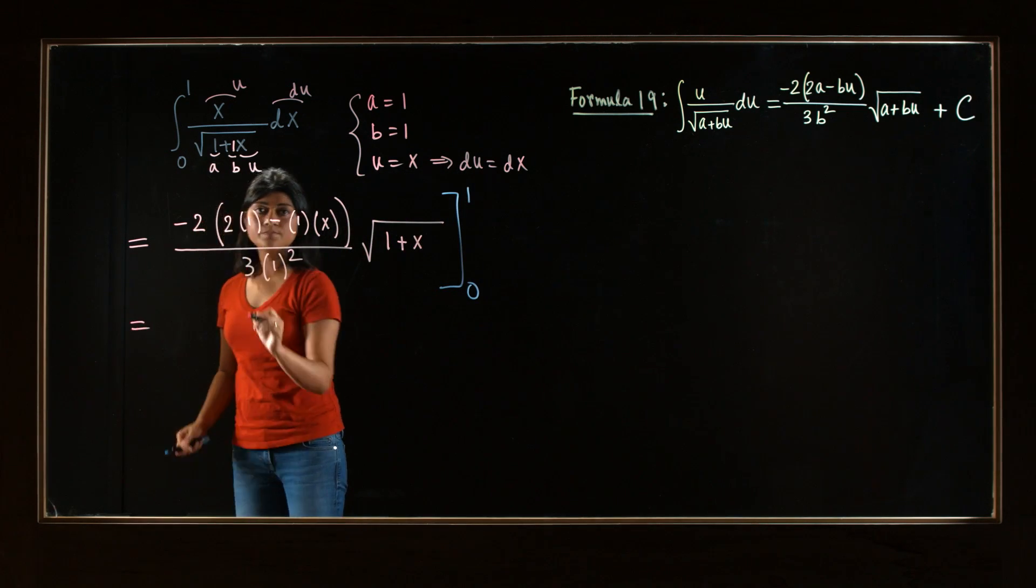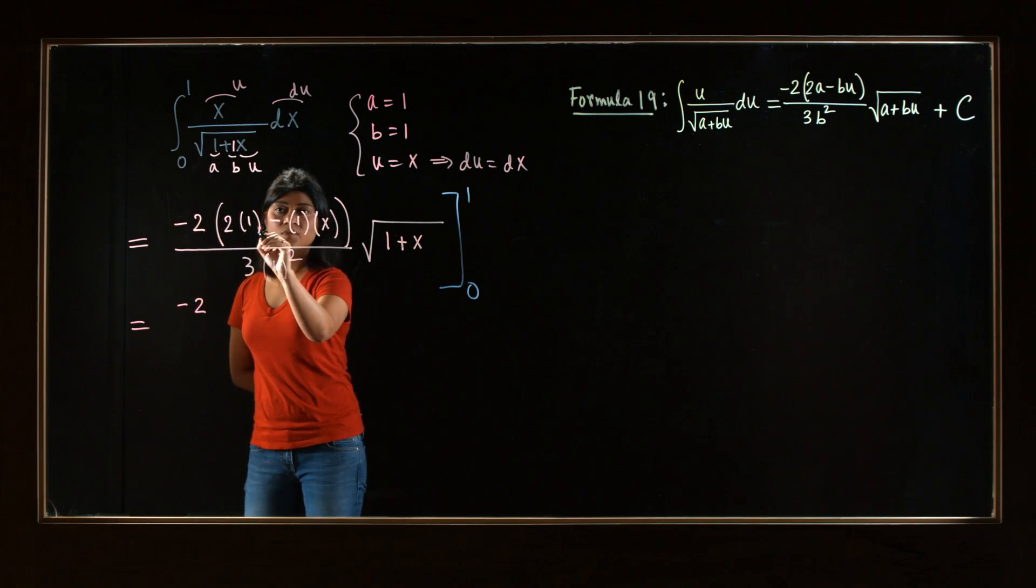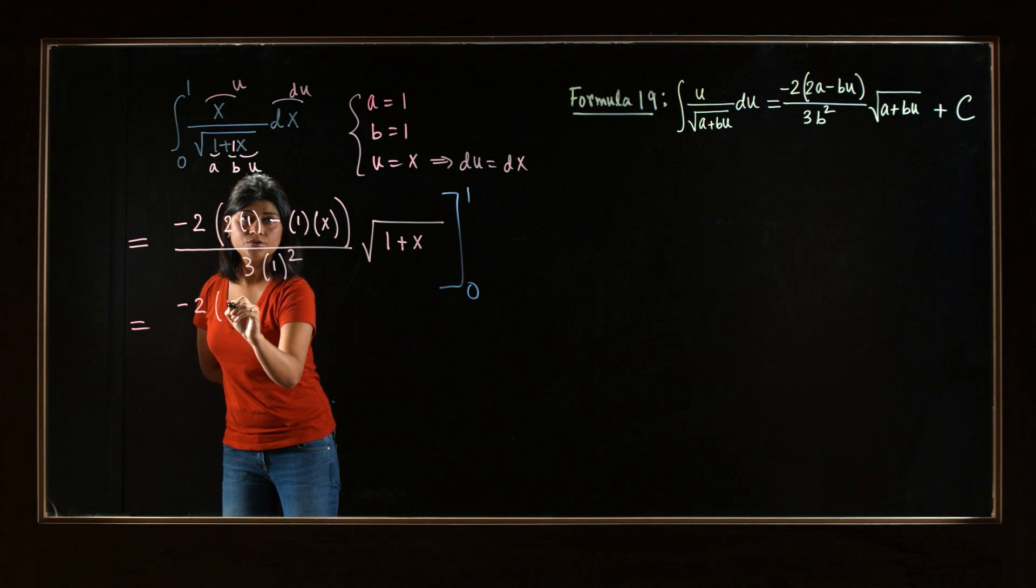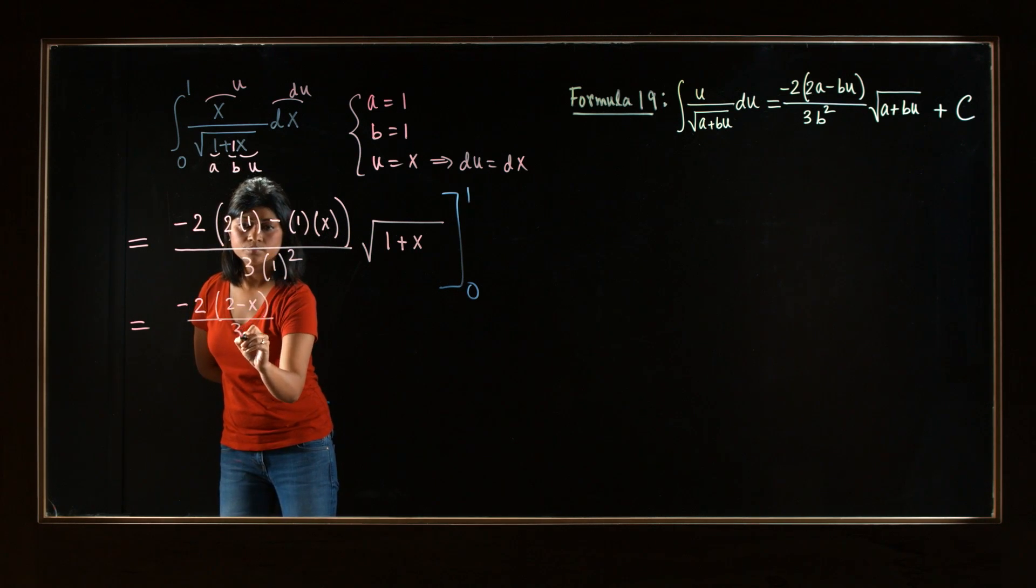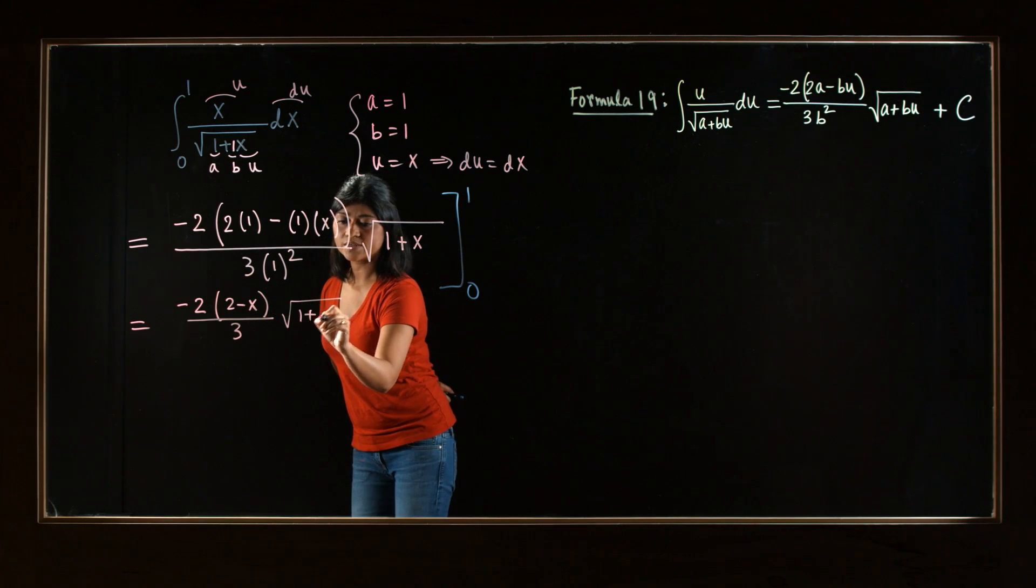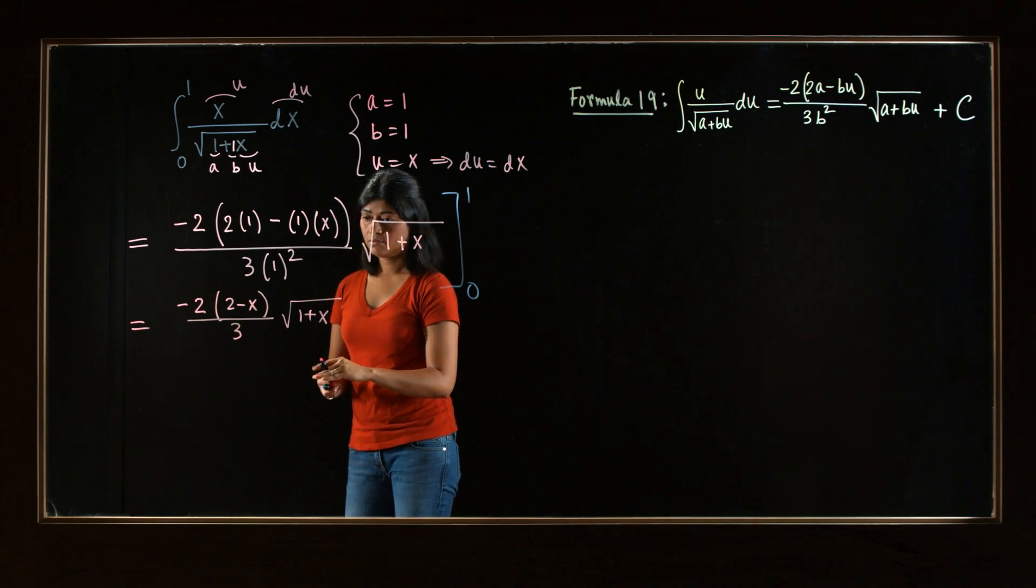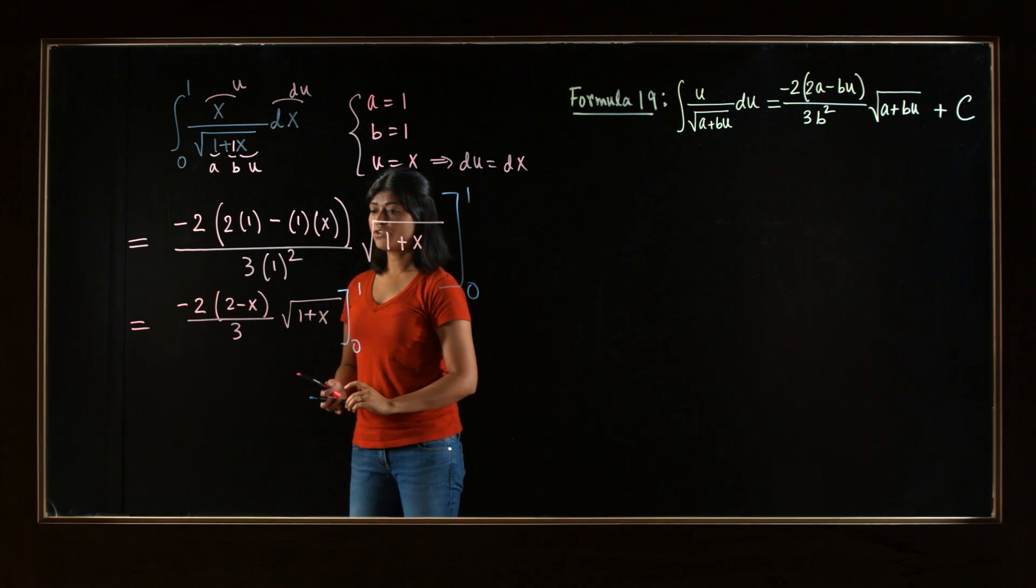Let's simplify this first. So what we have here is negative 2, and inside here, you have 2 minus x over 3, because 1 squared is 1, square root 1 plus x. And then, evaluate at 1 and 0.